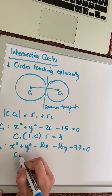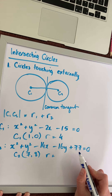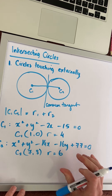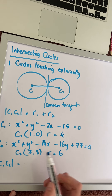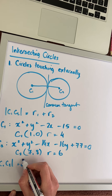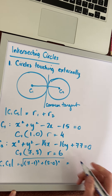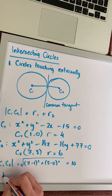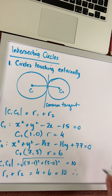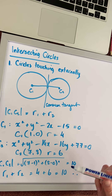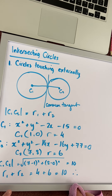Then we look at the center of circle 2, which is 7, 8, and radius square root of 7 squared plus 8 squared minus 77, which gives us a radius of 6. The next thing we do is look at the distance from center 1 to center 2. It's the square root of x2 minus x1, so 7 minus 1 squared plus 8 minus 0 squared, which gives us 6 squared plus 8 squared — a distance of 10. If we look at r1 plus r2, that's 4 plus 6, which also gives us 10. Therefore, circle 1 and circle 2 touch externally, since the distance between their centers equals the sum of their radii.